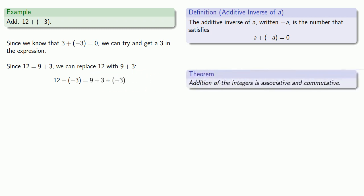We know that addition of the integers is both associative and commutative. So we can do this in any order that we want. We want to do this in the order that makes use of the fact that 3 plus the additive inverse of 3 is equal to 0. So we'll add these last two terms together to get 0. And 9 plus 0 is equal to 9.